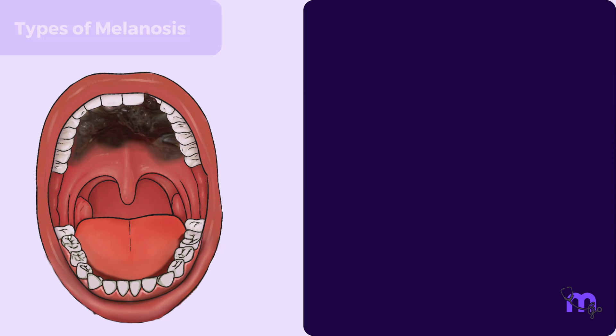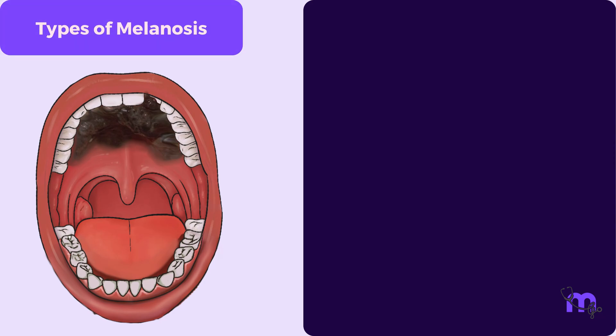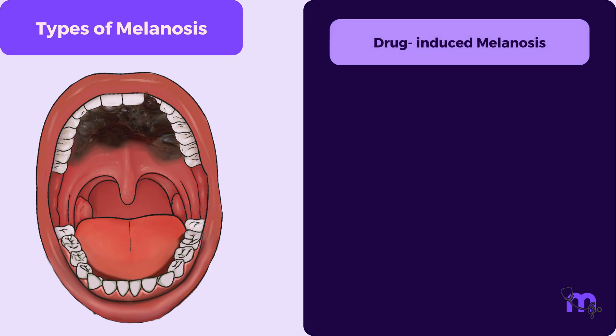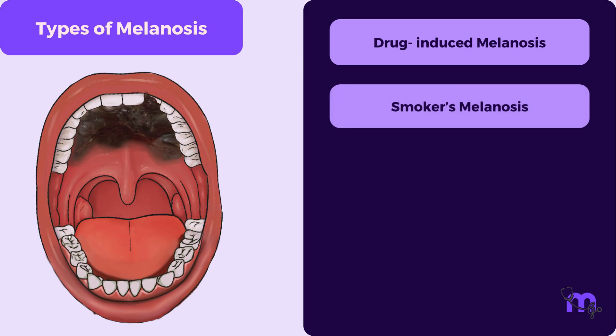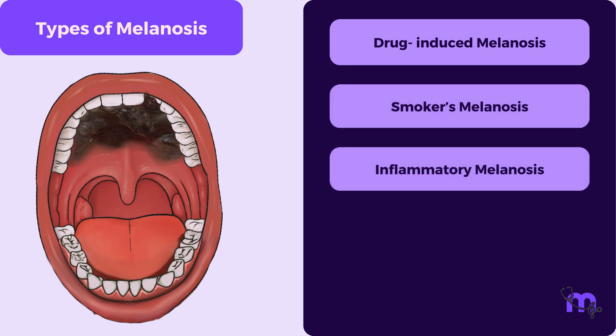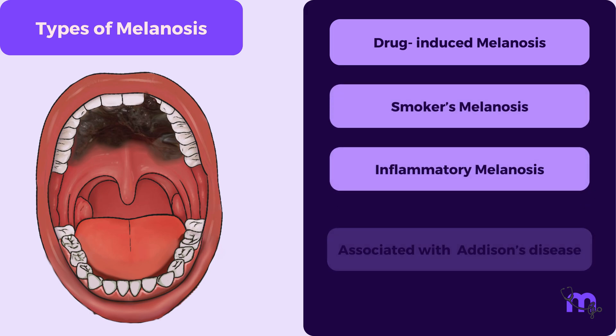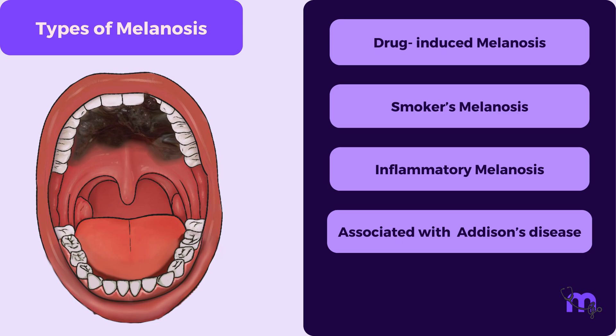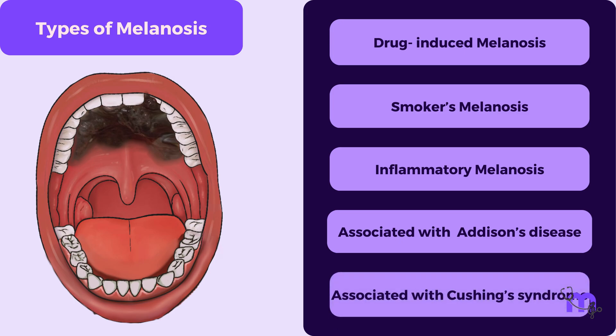Now let us briefly discuss the list of possibilities we considered before confirming our diagnosis. Five types of melanosis require consideration here: drug-induced melanosis, smoker's melanosis, inflammatory melanosis, melanosis associated with Addison's disease, and melanosis associated with Cushing's syndrome.